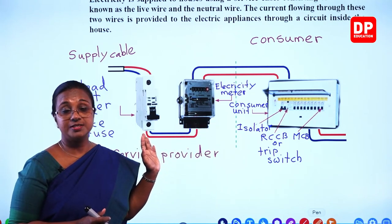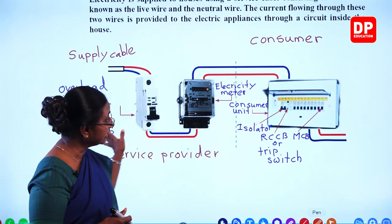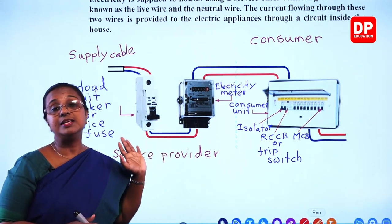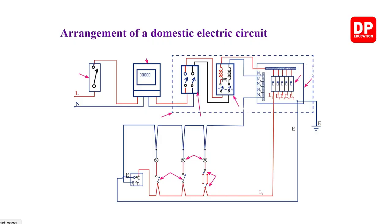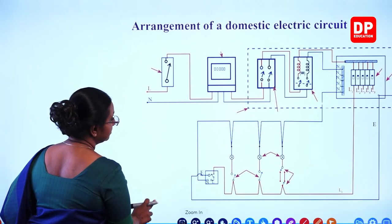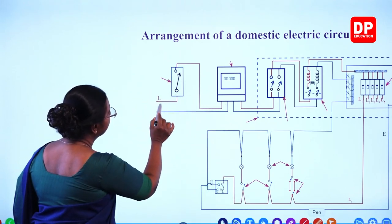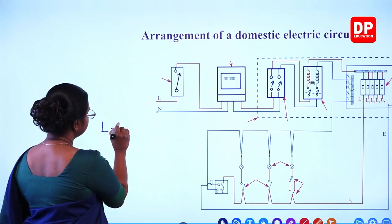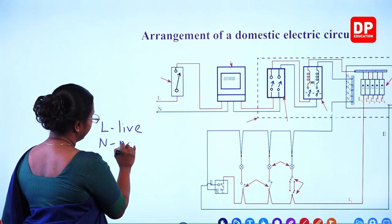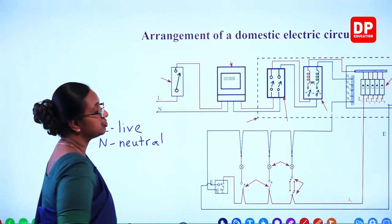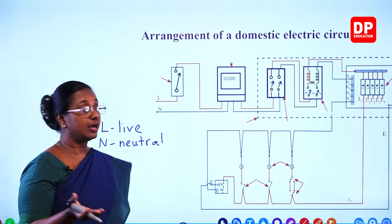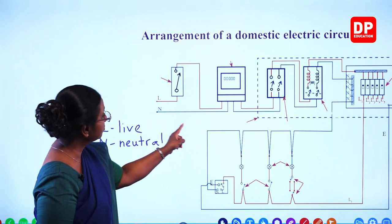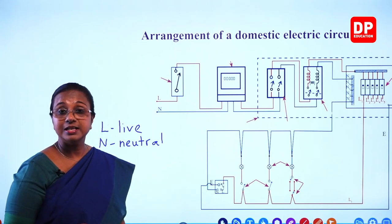Now we have an arrangement of the domestic electric circuit shown as a circuit diagram. L indicates the live wire and N is the neutral wire. L is usually brown color — in older circuits red was used — and neutral is the blue color wire. Green color is for the earth wire.